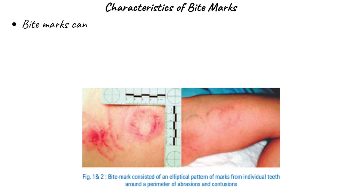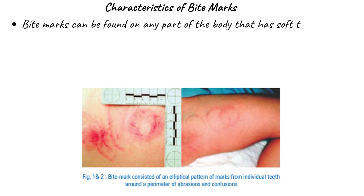Bite marks can be found on any part of the body that has soft tissue, such as the arms, legs, buttocks, breasts, and genitalia.